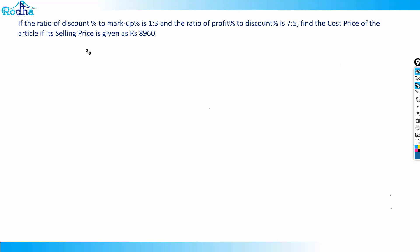Let's look at the next question. It says that the ratio of discount percentage to markup percentage is 1:3, and the ratio of profit percentage to discount percentage is 7:5. Find the cost price of the article if its selling price is given as rupees 8960.